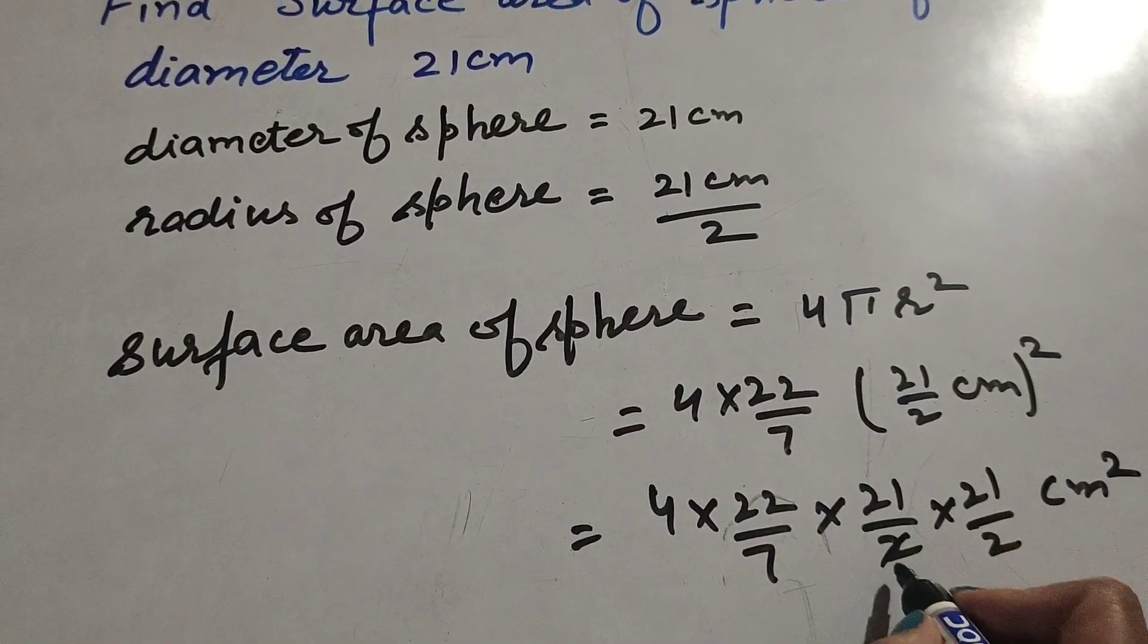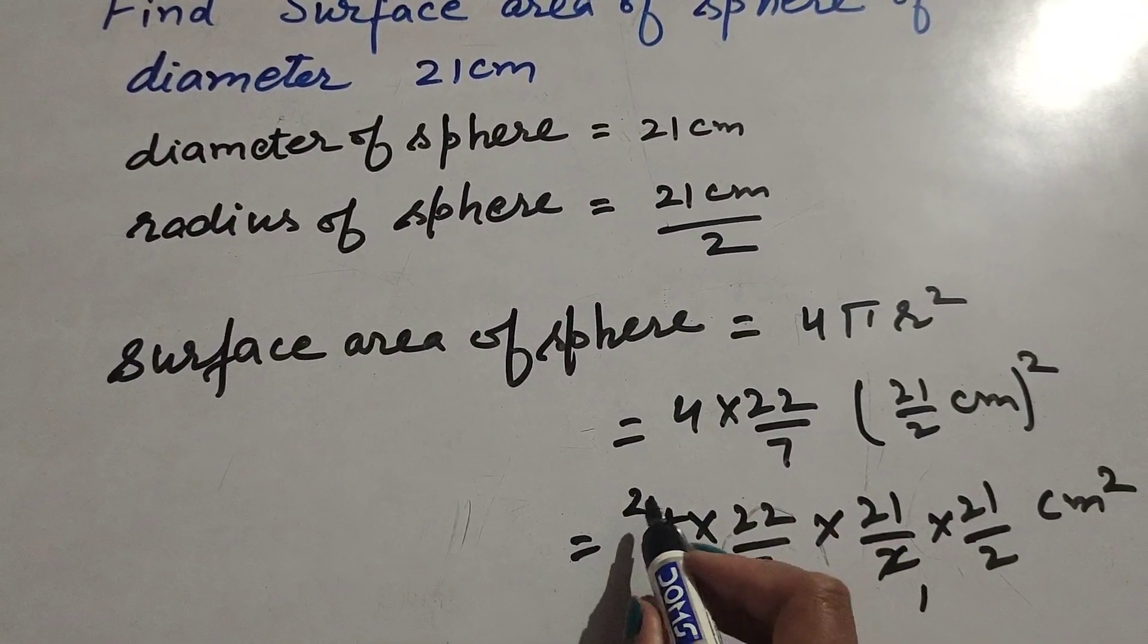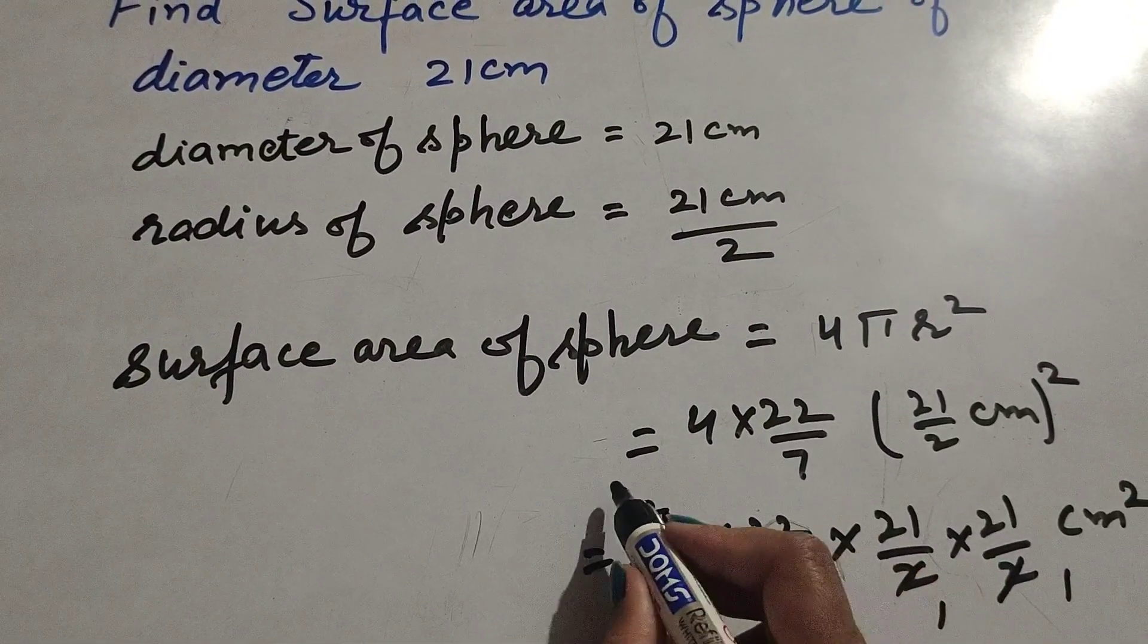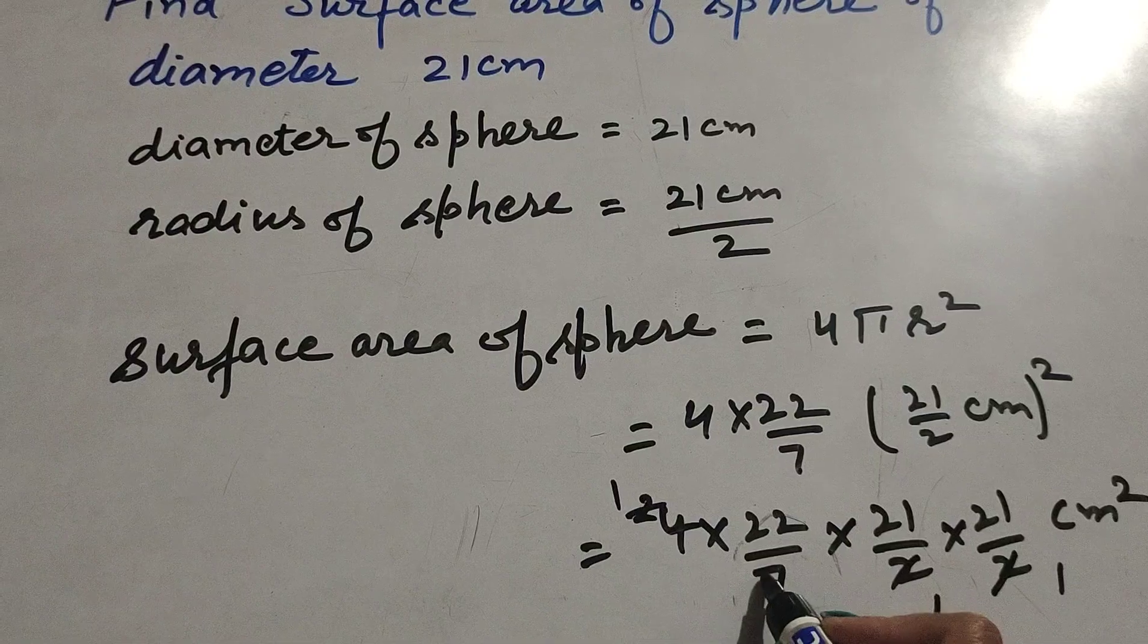2 and 4 are both divisible by 2, so we cancel them. 2 and 2 again cancel. 7 and 21 are both divisible by 7, so we cancel them.